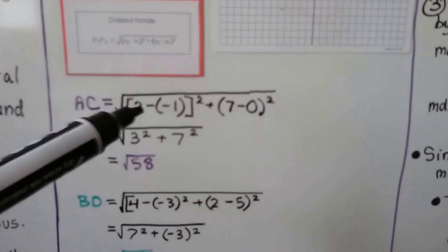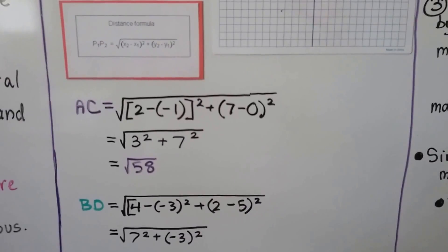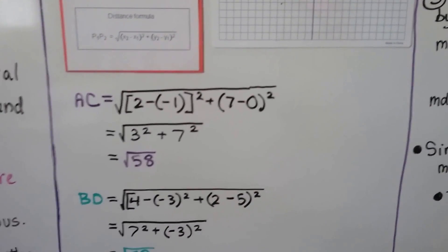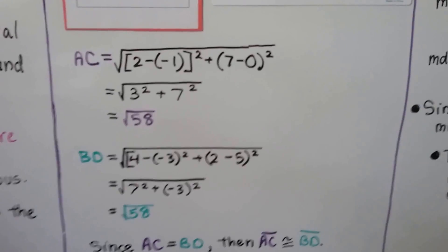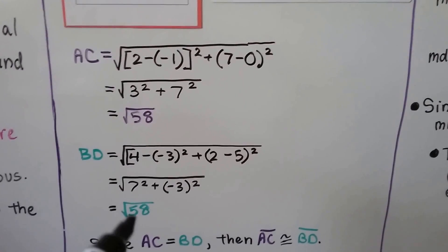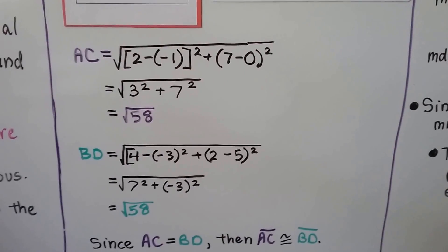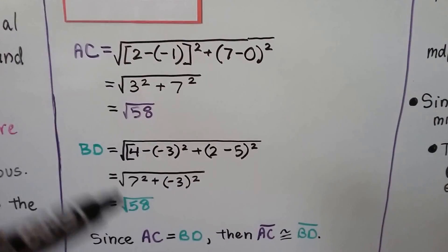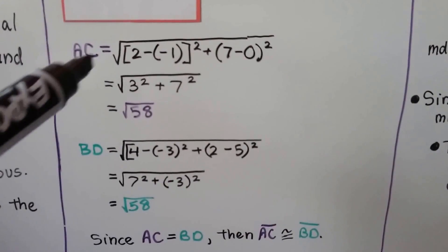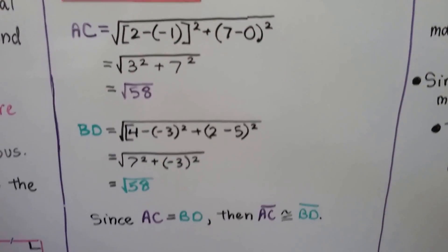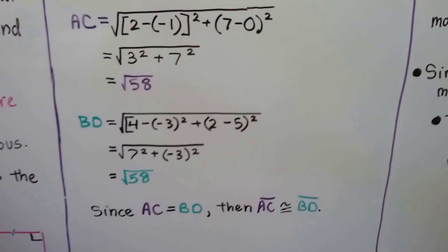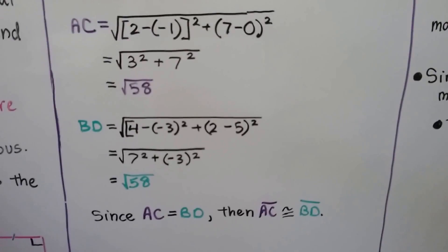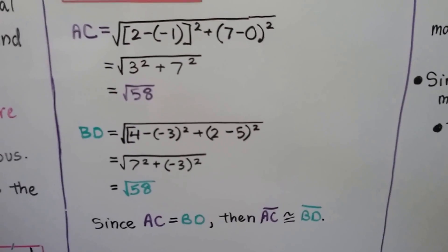For AC, we put the ordered pairs in and we get that AC is equal to the square root of 58. We put in the ordered pairs for BD and we get that it's also the square root of 58. So that's the length of each one — the distance between points A and C, and points B and D. And since AC equals BD, then segment AC is congruent to segment BD.